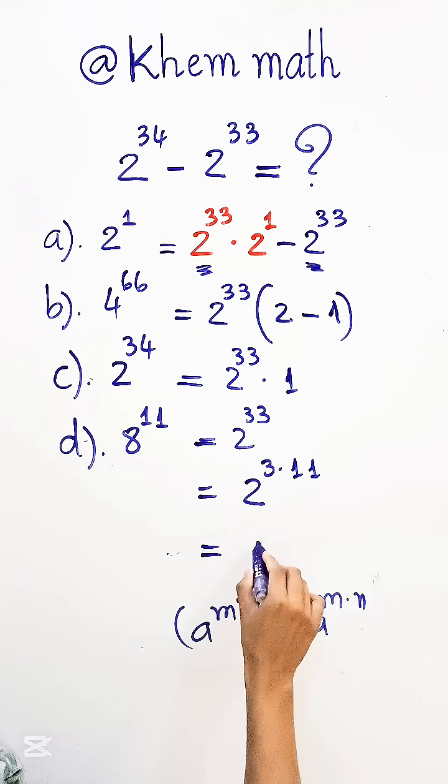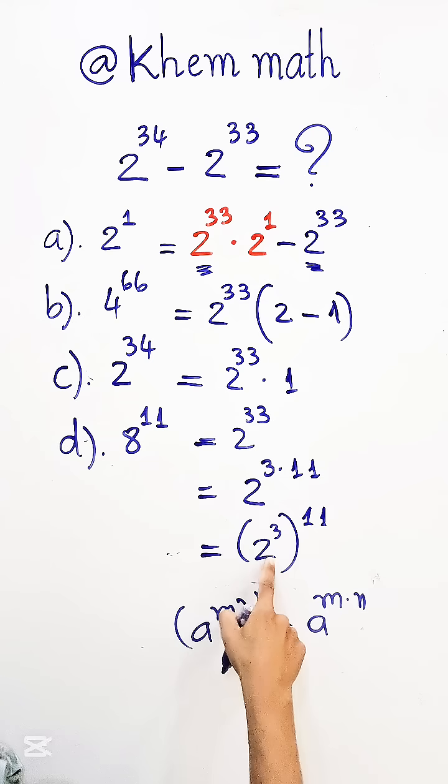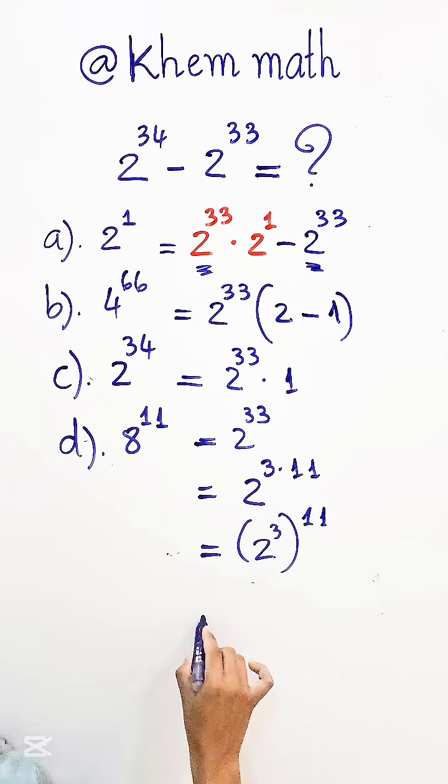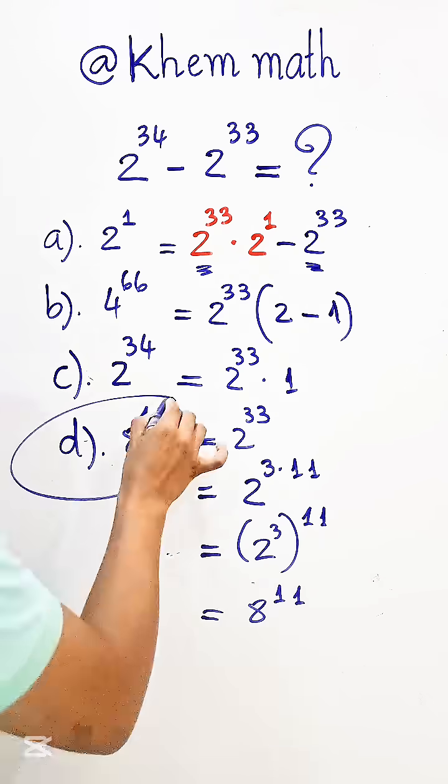So it equals (2 to the power 3) to the power 11. And here 2 to the power 3 equals 8. So we get 8 to the power 11. So our answer is this.